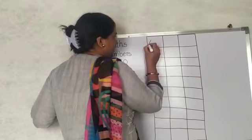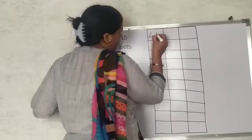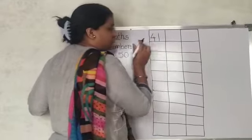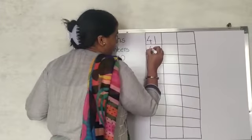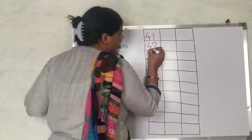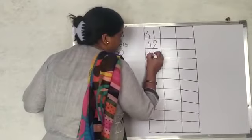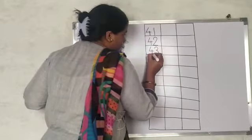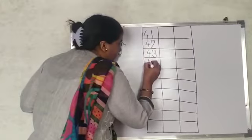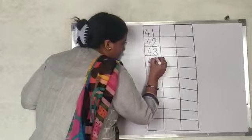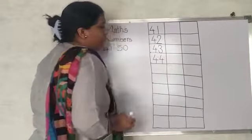First, write number 4, then 1. 41, 41. 42, 42. 43, 43. 44, 44.